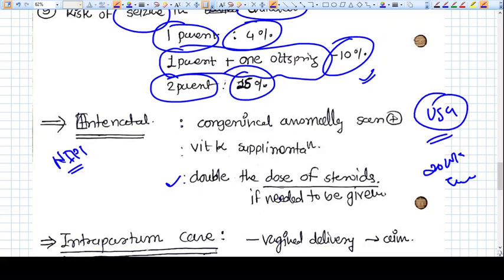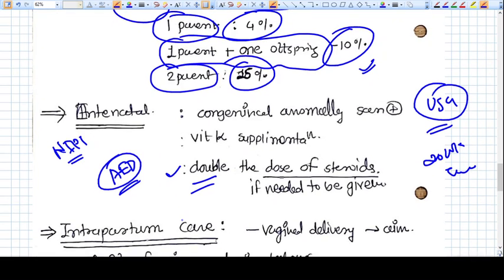If the steroids need to be given in the pregnancy, then the doses should be doubled because AEDs are enzyme-inducers and you need higher doses of steroids than usual.